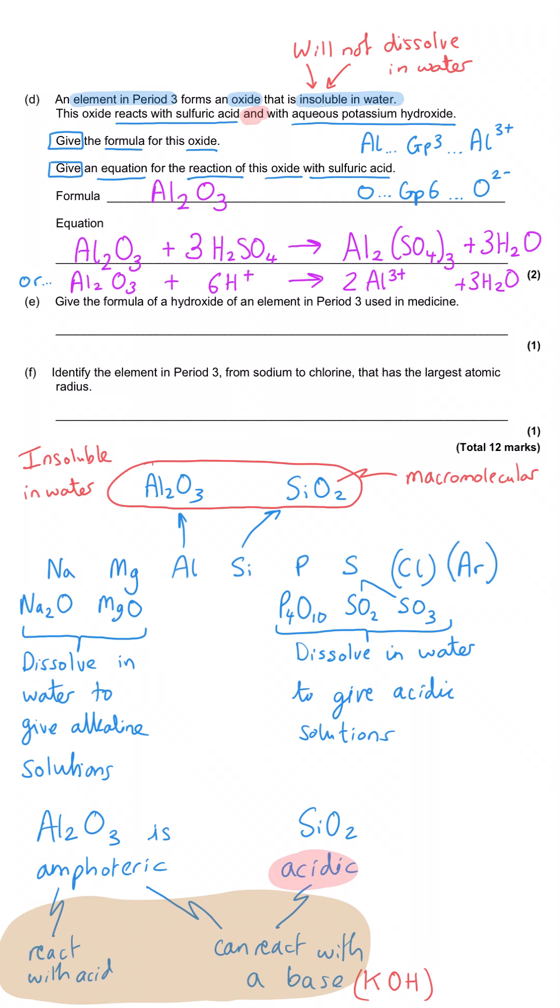Part E asks us to give the formula of a hydroxide of an element in period three which is used in medicine. Now there are two elements that are used in medicine: there is magnesium hydroxide which is used as an antacid, milk of magnesia, and there's barium sulfate in barium meals. Obviously since they're asking us about the hydroxide they want magnesium hydroxide, so its formula is Mg(OH)₂.